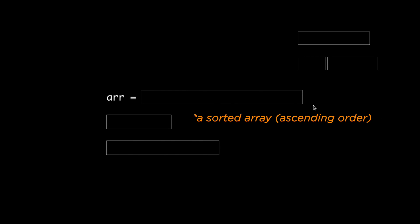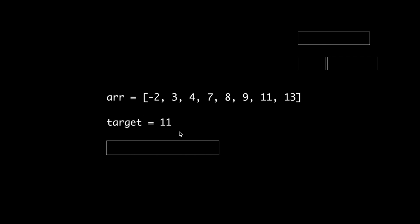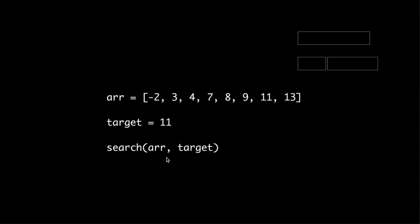Suppose you're given a sorted array of integers, for example this one, and you're also given a target integer, for example this one. Your task is to find the target in the array. You'll need to write a function called search that takes the array and the target, and returns the index of the target if it exists in the array, or minus one if it doesn't. In this particular example, the function should return 6 because the index of the target integer 11 is 6.